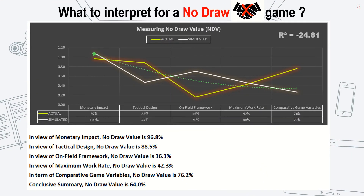End V is our standard formula used for calculating a percentage of game intensity and effects, involving components like monetary impact, tactical design, on-field framework, maximum work rate, and comparative game variables. These data contain similar simulated magnitude of change data as continuous exploration of actual game behaviors. There is a paucity of studies exploring the effects of what possible triggers may occur within these given regressed conditions.